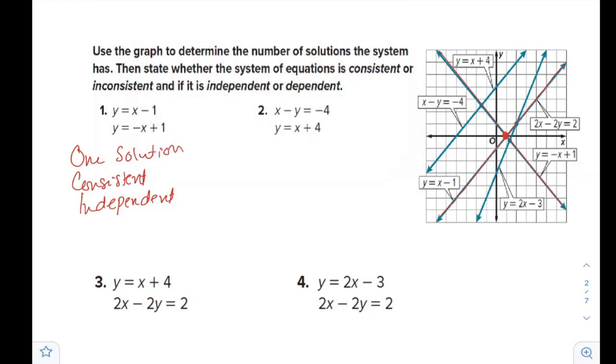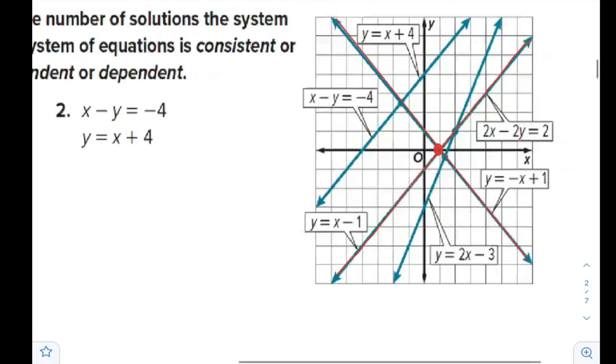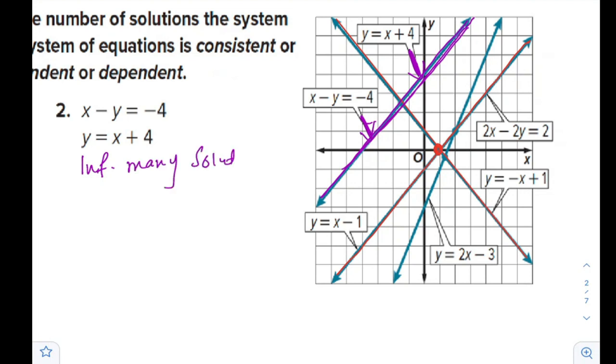Question 2: x minus y equals negative 4 and y equals x plus 4. It is the same line. We are both talking about this line. So that means the lines are coinciding. We have infinitely many solutions. The system is consistent and dependent.